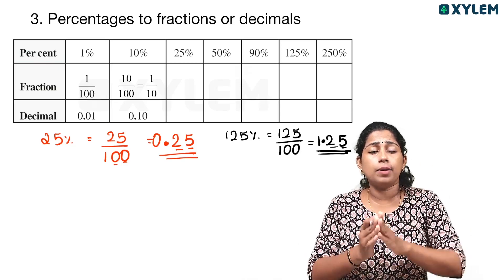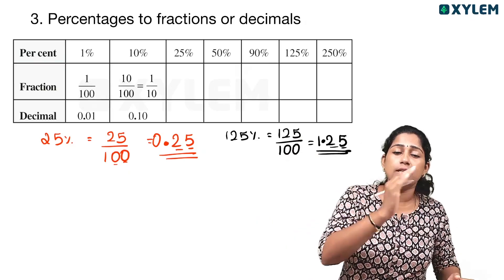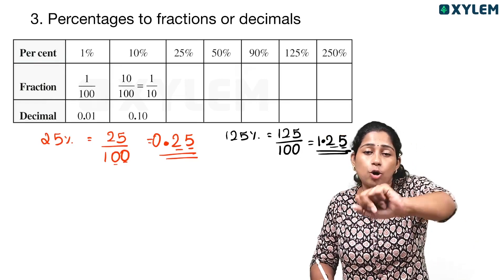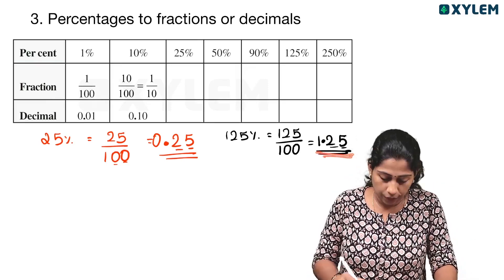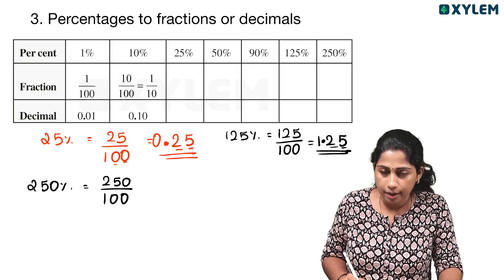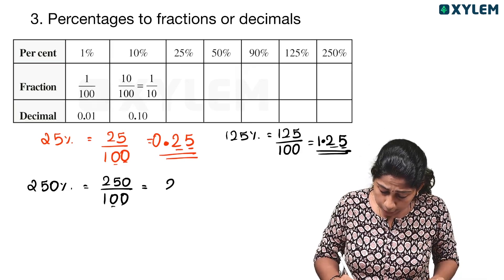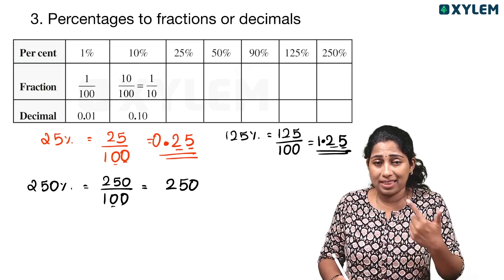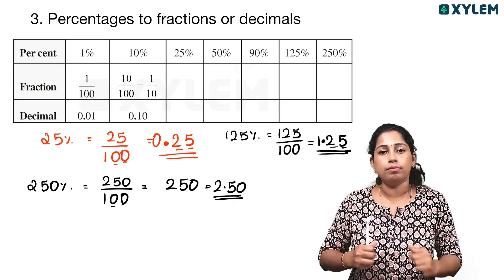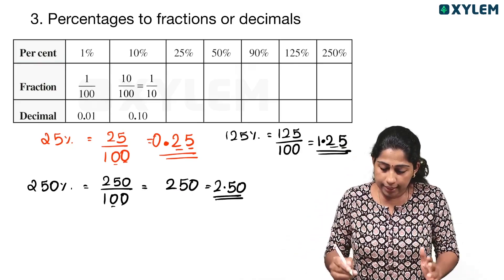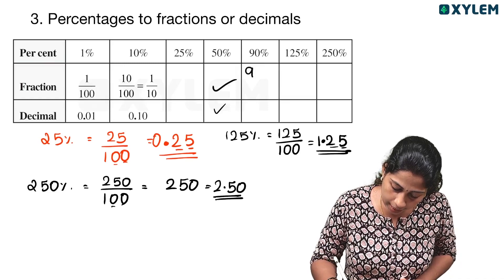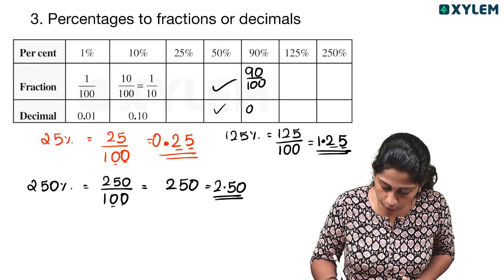You will write the decimal by moving 2 places to the right. The right side has 5 — that's position 1, 2. So the answer becomes 1.25. For 250 percent: 250 divided by 100. We move 2 decimal places — the answer is 2.50. For 90 percent: 90 divided by 100, so the decimal is 0.9.